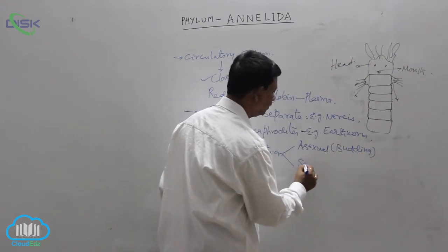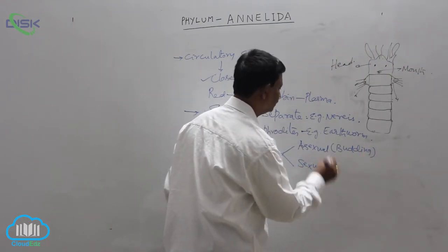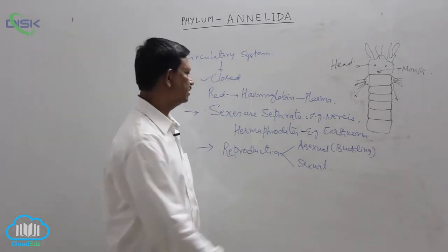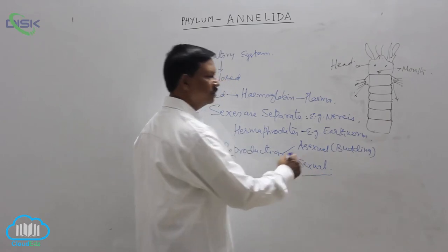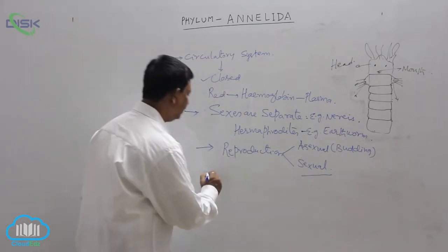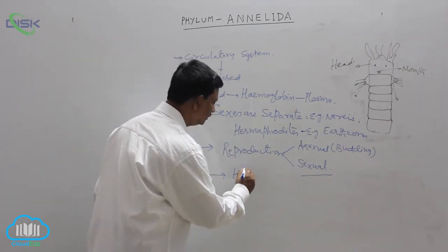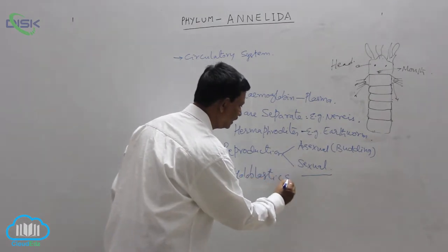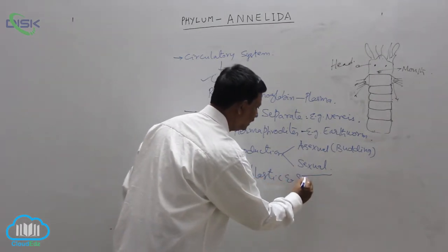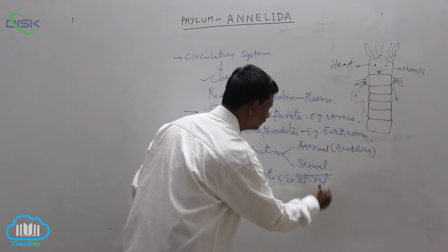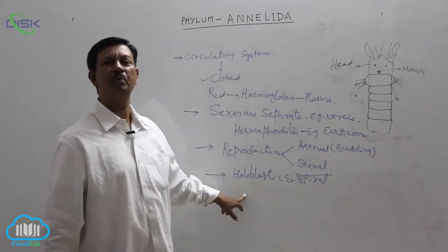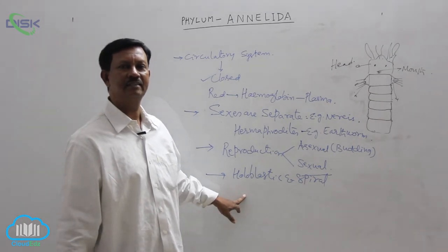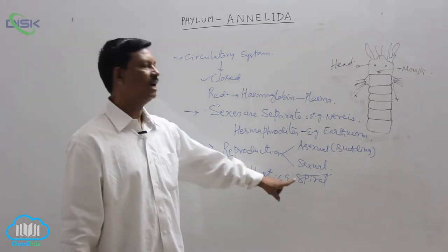Sexual type of reproduction takes place in the majority of animals. Male and female gametes unite and form a zygote — that is known as sexual reproduction. Cleavage is holoblastic and spiral. Holoblastic means complete division takes place from the anterior end to the posterior end.